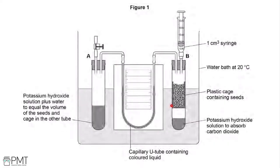The seeds inside tube B are respiring, so they're taking up oxygen and producing carbon dioxide and water. Interestingly, there's a presence of potassium hydroxide at the bottom of test tube B. As this is absorbing carbon dioxide, we're removing the product CO₂. We're also removing oxygen remaining inside the apparatus. Because we only have a limited supply of oxygen, we're decreasing the volume within tube B. The only presence of oxygen remaining, if we disregard tube B, is inside the U-tube containing the colored liquid, and also inside the 1 cm³ syringe.